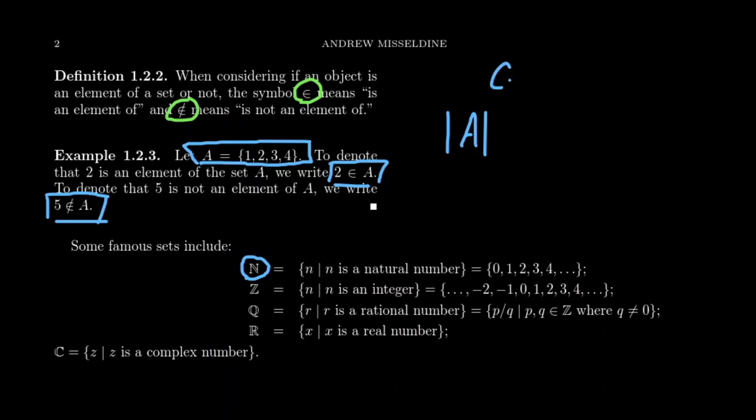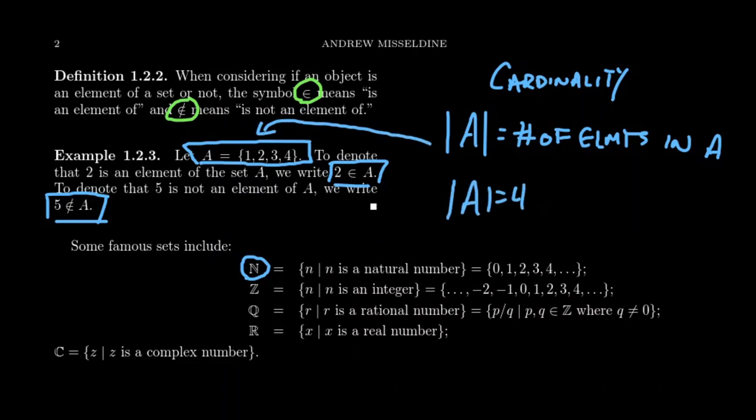If ever you see a set A and you put what looks like absolute value symbols, this is going to count the cardinality of the set. Which this means the number of elements, the number of elements in the set A. And this cardinal number, if A is a finite set, will always be a natural number. So if you take the example we had from before, like say this is our definition of A, then in that case the cardinality would equal four. On the other hand, if we take the empty set, the cardinality of the empty set would be zero. There's no elements inside of that.